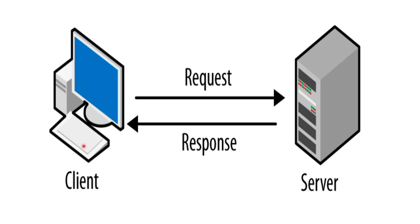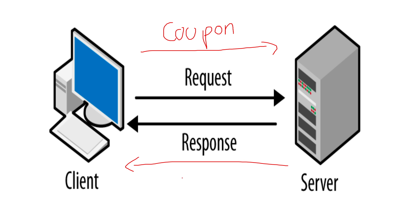The client is our user. If you want to communicate with a server, you use request and response. If you look at the coupon code — in the request, there is a coupon code sent as a POST request. The response comes back with $100. A 20% discount on a $100 item is the result of that request.